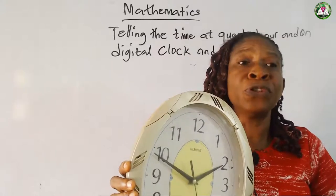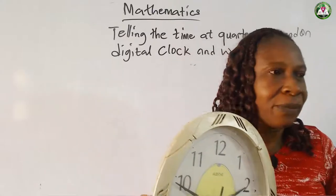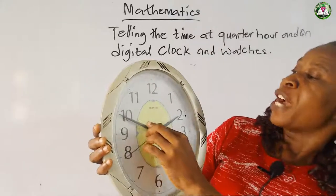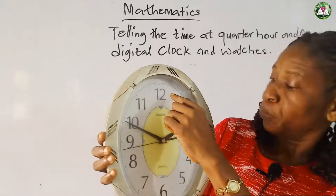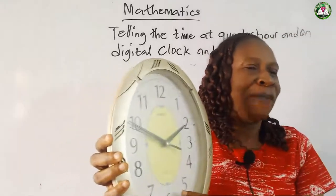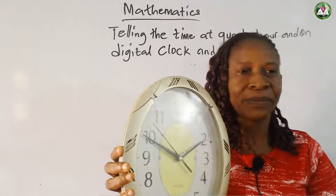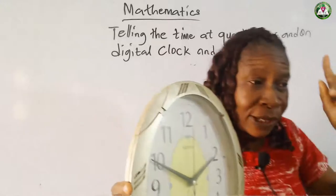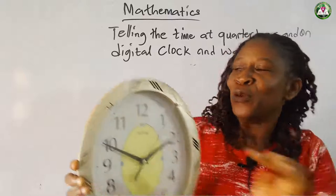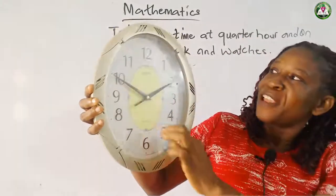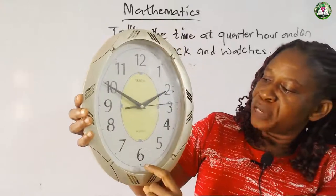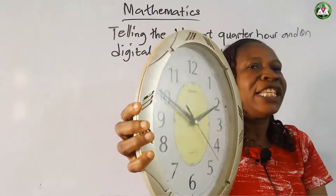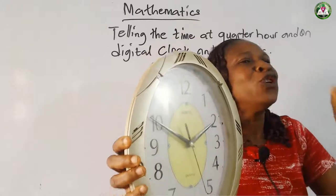Correct — it is two o'clock. Now getting to half past, you did it also in your last lesson. When this long hand moves from twelve to six, it is now half past. We were told that sixty minutes makes one hour. For you to get half an hour, it is sixty divided by two. So six is used for half past. Or if you don't want to say it is half past two, you can say it is two thirty.